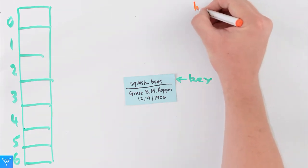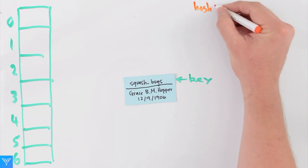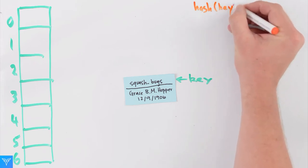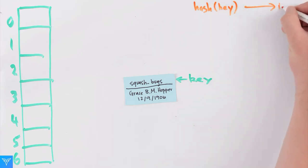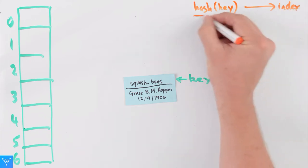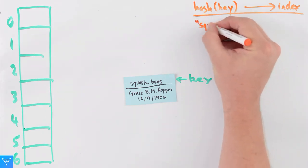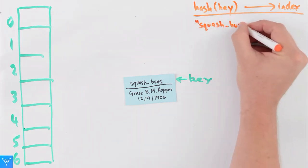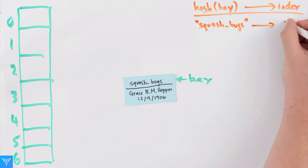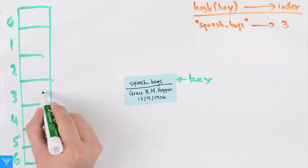The hash table works by taking a function, called the hash, which takes in a key and returns an index. Some references will talk about a hash code function and then a compression function separately. But ultimately, we need a function that takes a key and gives us the location in the array. So we feed our hash function the key SquashBugs and get the number three. That tells us when SquashBugs gets added to the array, it gets added at index three.